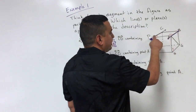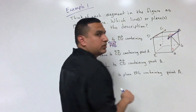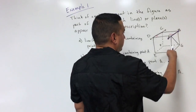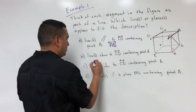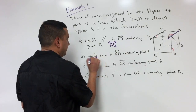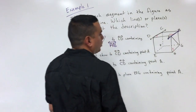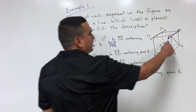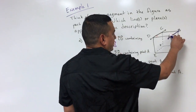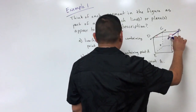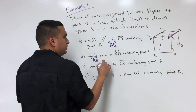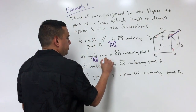For part b — line skew to CD containing point A — remember skew means on a different plane. Line AB would be part of the top plane, so that wouldn't work. A line that would be skew would be line AH. You could also use line AG — since it's going slanted, it would not be parallel and would not be intersecting either.